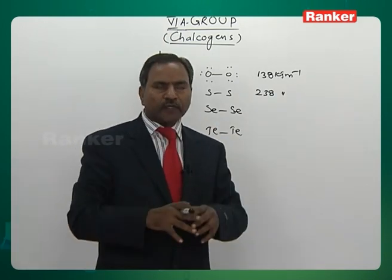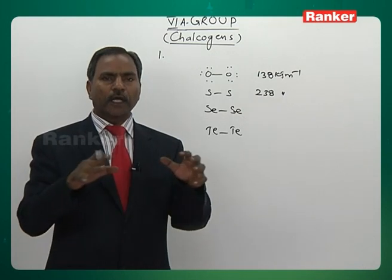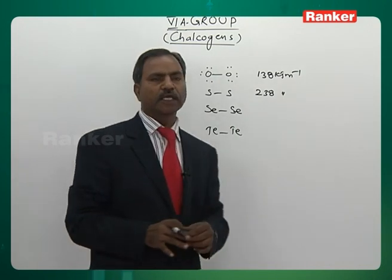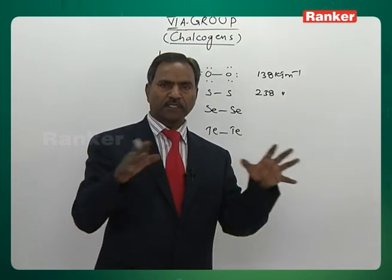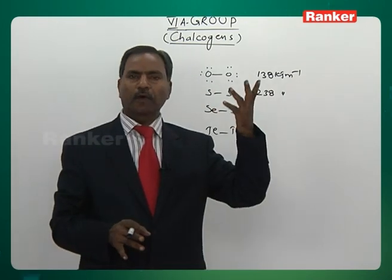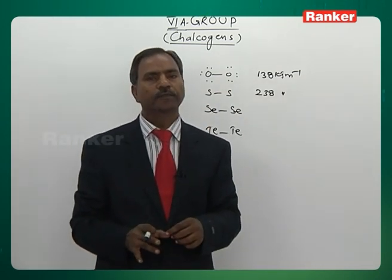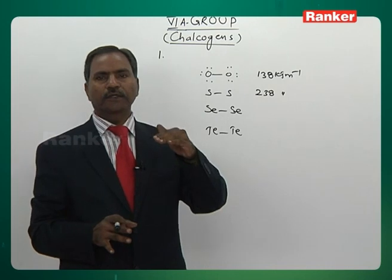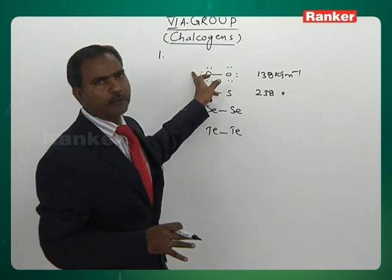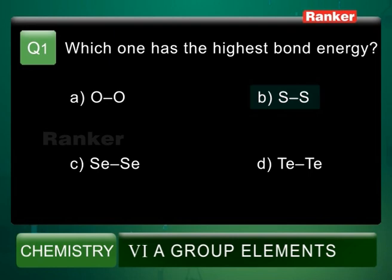For selenium to selenium, the atomic size is increasing further, so bond energy decreases again. For tellurium to tellurium, the atomic size is very big, so bond energy is even less. Though oxygen should ideally have more bond energy, lone pair repulsion reduces it. Sulphur to sulphur bond energy is the highest. Therefore, for question number 1, the answer is B.